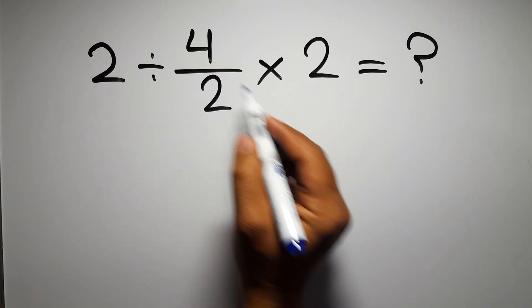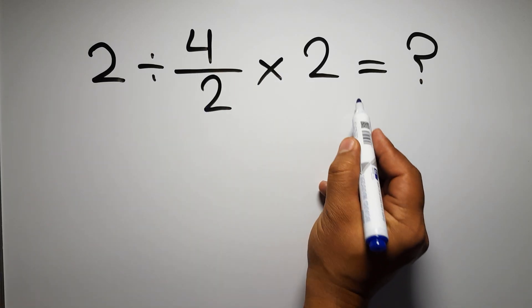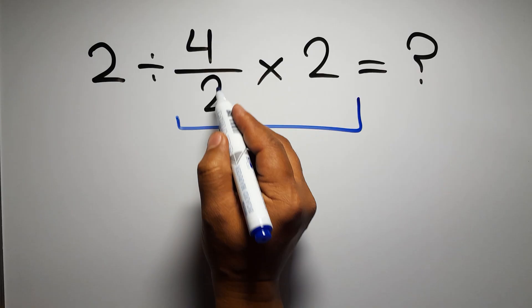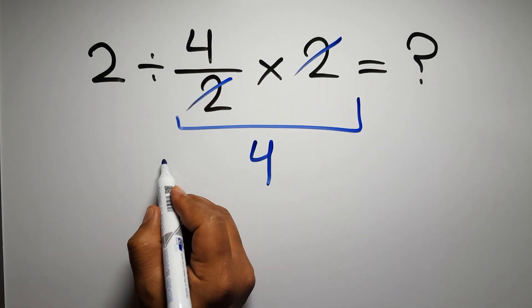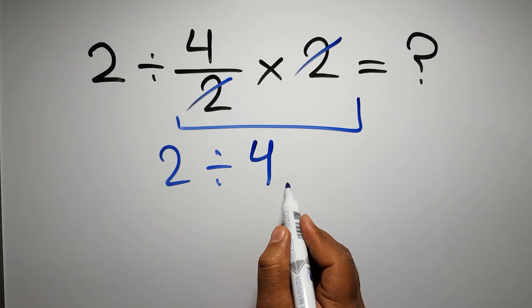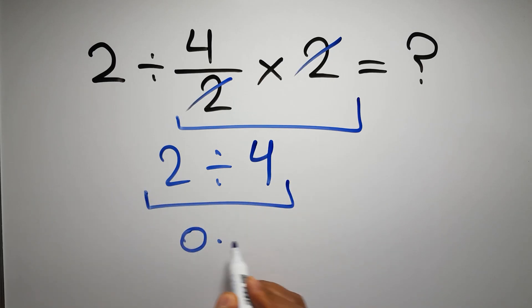First, we do this multiplication. 4 over 2 times 2. We can easily cancel these 2 and these 2, so we have just 4. And 2 divided by 4, which equals 0.5.